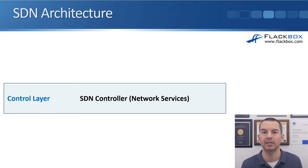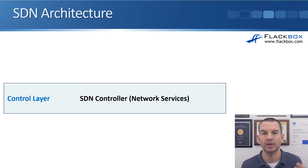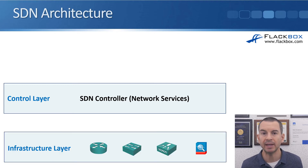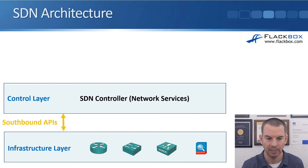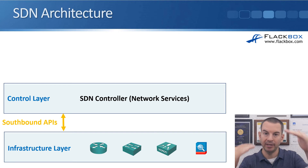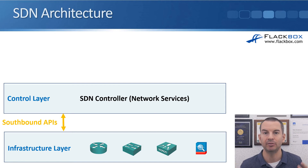Let's look at the SDN architecture — information you definitely want to know for the CCNA exam. Everything is from the point of view of the SDN controller, so we start there. At the control layer we have our SDN controller, which provides the network services. It manages our network devices — routers, switches, etc. — which live in the infrastructure layer, which in the hierarchy is below the control layer. Because the network devices are below the controller in the hierarchy, we use southbound APIs from the controller to control the network devices.